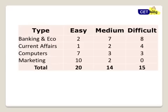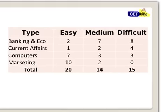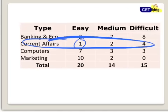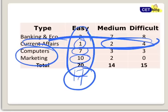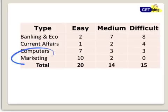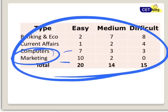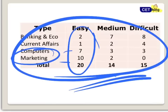Most people spend maximum time on current affairs. But look at the level of difficulty — only one easy question from current affairs; rest are medium to difficult. But look at the last two areas — computers: 7 easy questions. Marketing: 10 easy questions. 17 marks we can easily solve. Out of total 20 easy questions, 17 are going to be from computers and marketing. So these are your two areas to focus on. Please pause the video and take a note because this is very very important — know your competition. You can download my YouTube videos or take a screenshot of these level of difficulties.